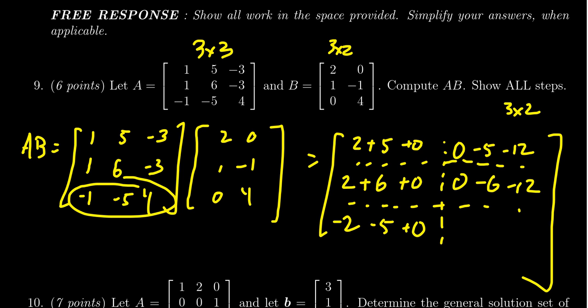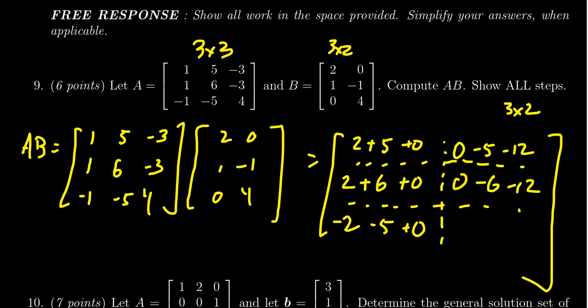For row three times column two we get negative one times zero which is zero, minus five times negative one which is a positive five, and then four times four which is sixteen. We now want to add these terms together for each entry.